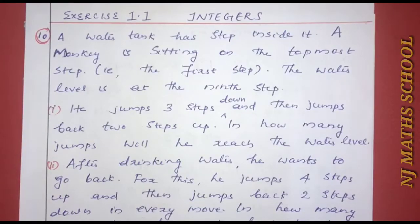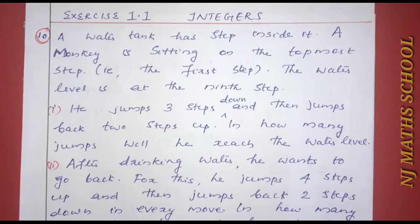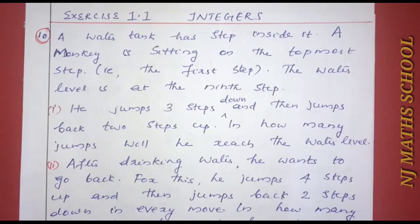In the first exercise of Chapter 1, what is the last question? A water tank has steps inside it. A monkey is sitting on the topmost step — that is the first step. The water level is at the ninth step. The monkey jumps three steps down and then jumps back two steps up. In how many jumps will he reach the water level?